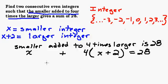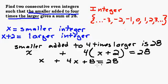There we have our equation. Once we have our equation, we can use our equation solving techniques. We're going to distribute the four: four times X and four times two. We'll combine our like terms. X plus four X is five X.